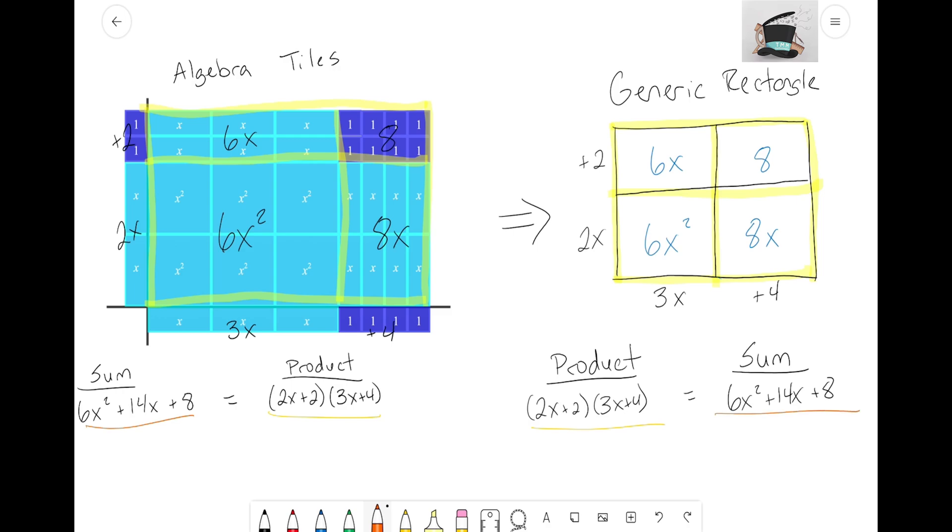The sum for both of those examples didn't change. Again, our goal here is that we want to start to transition away from algebra tiles and instead focus on generic rectangles. Really generic rectangles are made from algebra tiles, but from now on we're going to try our best to not use the algebra tiles and instead focus on creating a generic rectangle.